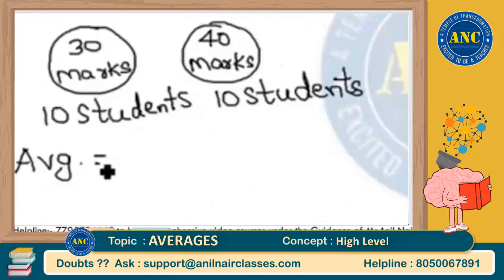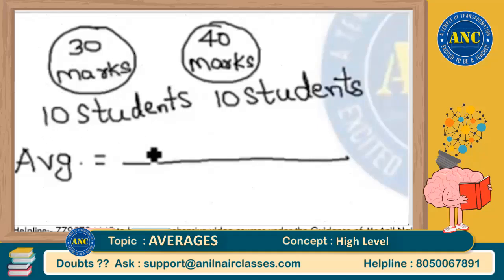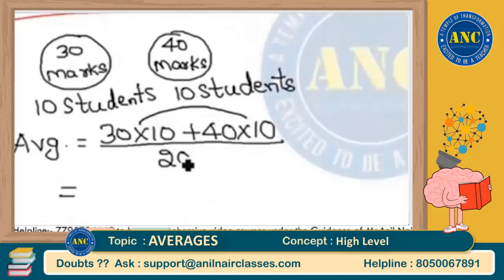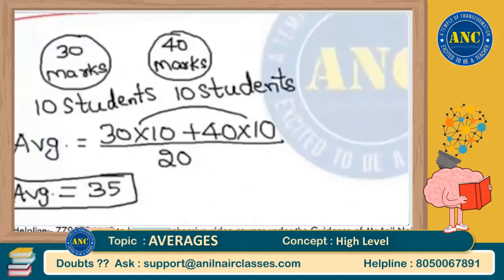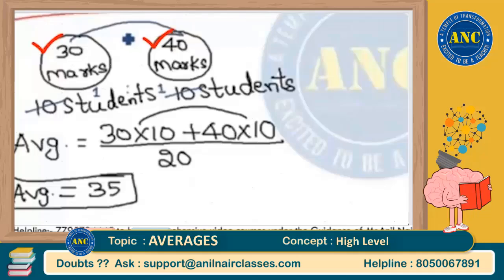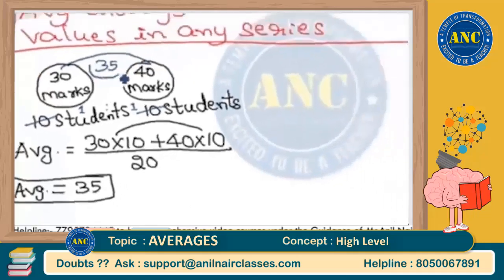How do we do it? The sum is 30 × 10 plus 40 × 10, divided by the total number of students (10 + 10 = 20). That gives 300 + 400 = 700, divided by 20, which is 35. Since the number of students in both sections is equal (ratio 1:1), the combined average is simply the average of the two averages: (30 + 40) / 2 = 35.